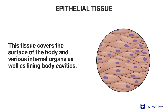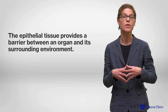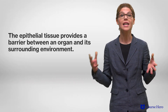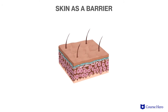Epithelial tissue covers the surface of the body and various internal organs as well as lining body cavities. It consists of layers formed from cells packed tightly together in sheets. This tissue provides a barrier between the organ and its surrounding environment. For example, the skin is a type of epithelial tissue that protects the interior of the body from the environment.